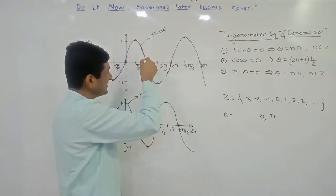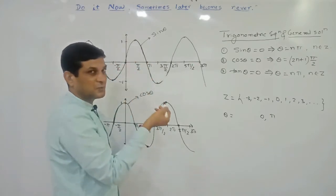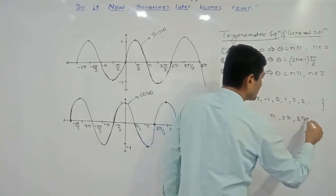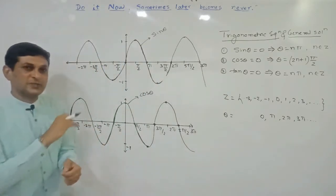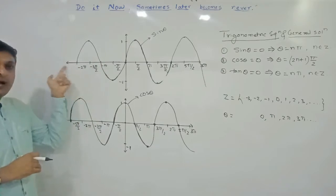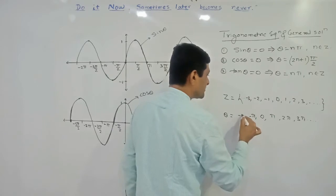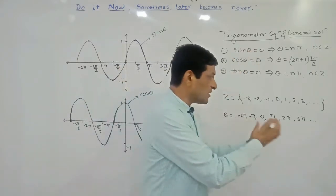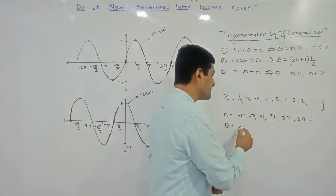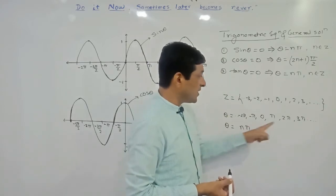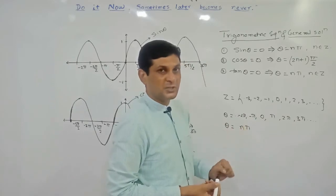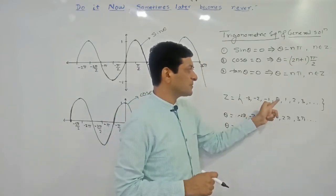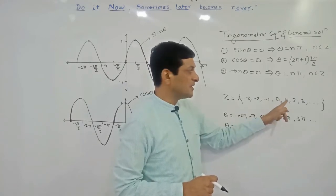From the graph, sin θ = 0 when θ = π, and again at 2π, 3π, 4π, and so on. On the negative side, sin θ = 0 at −π, −2π, −3π, continuing this way. Instead of writing all these values separately, we can express them compactly as θ = nπ, where n is the coefficient of π and n belongs to the integers. Substituting n = 0 gives 0, n = 1 gives π, n = 2 gives 2π, and so on.